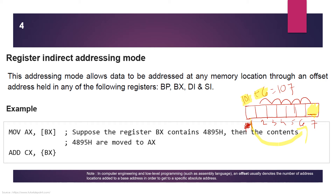In register indirect addressing mode, the instruction 'MOV AX, [BX]' means we use the square bracket to indicate an address. The BX register contains an offset value. We are not going directly to the address — we go through the offset. The address is held in registers like BX, which contains the offset values used to reach the desired memory location.